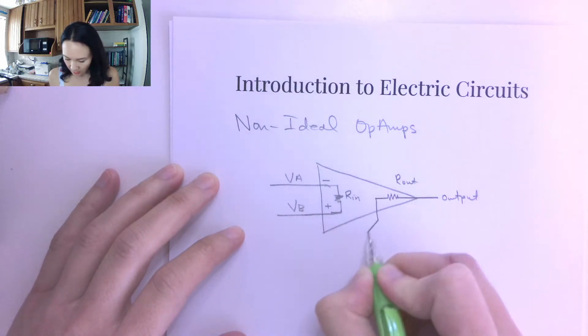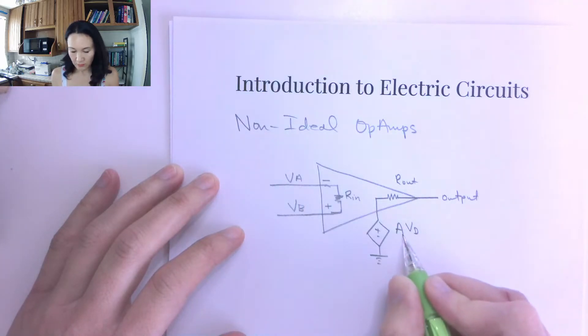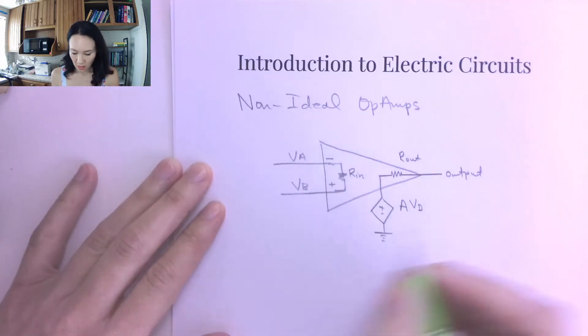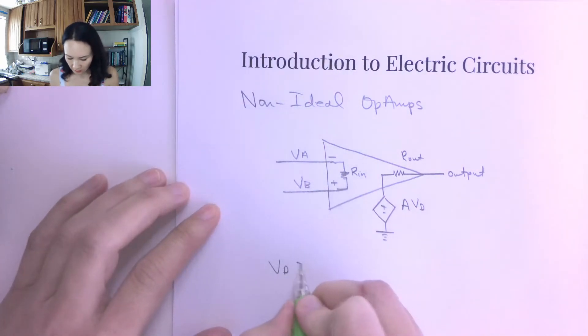And the output that's going to come out is going to be a voltage. And the voltage is going to be a function of the gain times VD, where VD is a voltage difference between these two inputs. So this is VB minus VA.